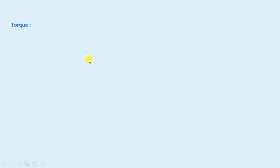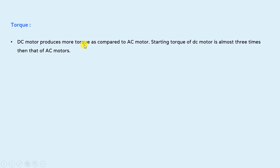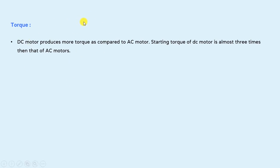The next point is torque. DC motors produce more torque as compared to AC motors. The starting torque of a DC motor is almost three times that of an AC motor. So if we want a high starting torque, then DC motor is preferable.